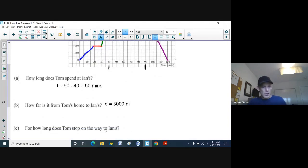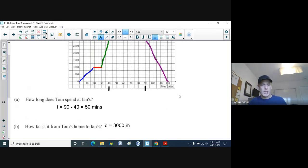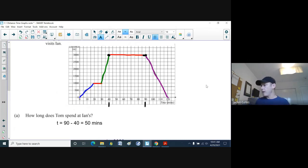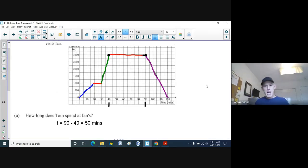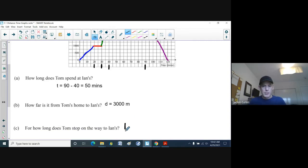For how long does Tom stop on the way to Ian's? Let's have a look here. If you're looking at the graph, can anybody help me out there? 10 minutes. Yeah, 10 minutes. He stopped at the 20-minute mark, and he started getting back going at the 30-minute mark. So yeah, 10 minutes. This is just reading a distance time graph, getting info from it.